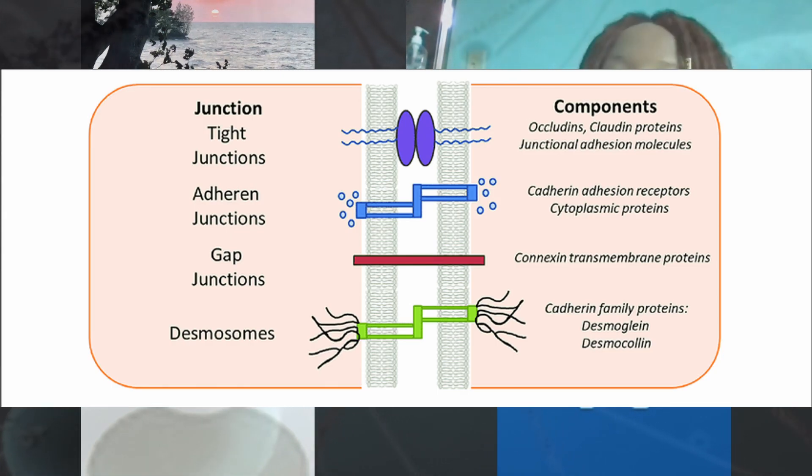As a result, cells are anchored from the top, the side, and the bottom by different proteins. There are tight junctions, anchoring junctions, and gap junctions. These exist between cells to hold them together and also form channels to allow ions or substances to pass through, or to allow the cells to communicate. Those three things will be the core component of the next session.